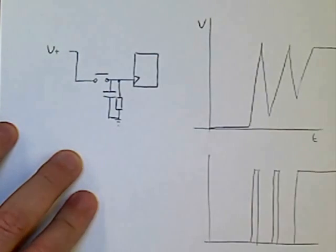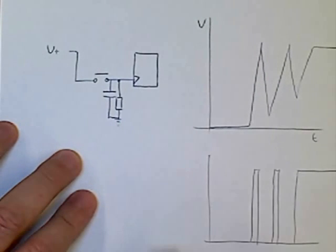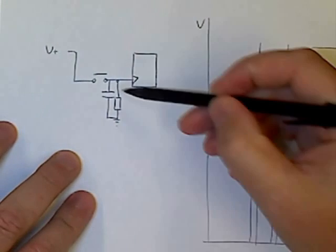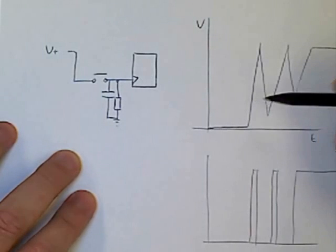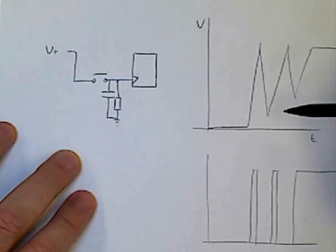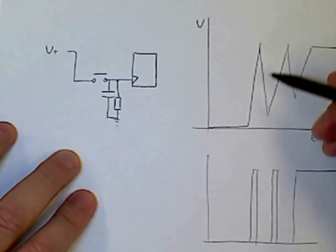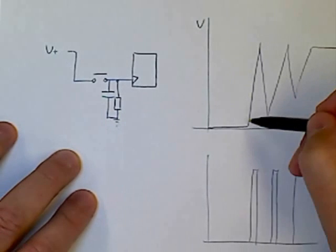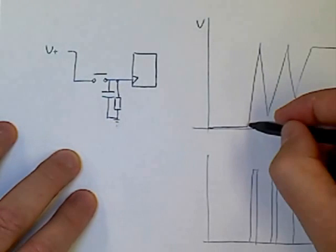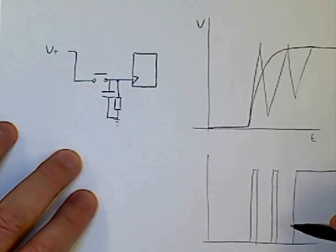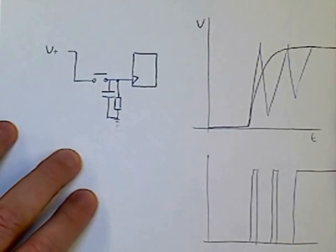Now, if you make that capacitor sufficiently large, it changes how quickly that voltage can change. So if the voltage cannot change very quickly because of that capacitor that it now has to charge up, then the input of our switch no longer looks like this, but it looks like that. And this will now only represent one logic pulse rather than several.